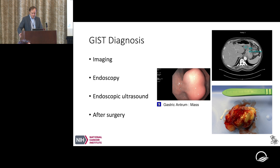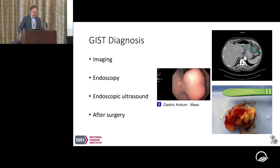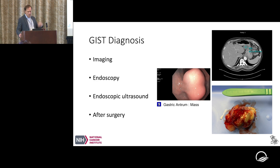When we think about how to diagnose GIST, imaging can find it incidentally during imaging done for another reason. Sometimes endoscopy is done because of symptoms and a mass is found underneath the mucosa — the inner lining of the stomach. Endoscopic ultrasound can confirm that the mass is under the inner lining, and sometimes we see a mass, take it out, and figure it out after the fact.